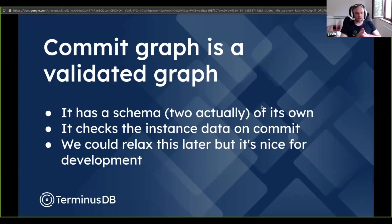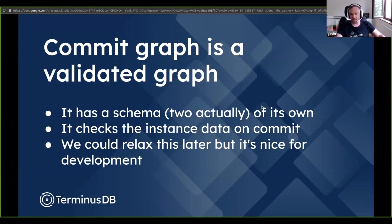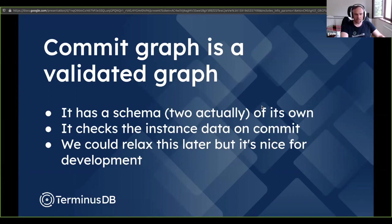The commit graph is itself a validated graph — it has a schema. In fact it has two schemas, and it takes the union of the two and checks the commit graph against that union. All instance data written there should be transactionally correct according to that schema. We could relax this later, and it does reduce performance somewhat, but it's really nice to have — we've caught several errors from accidentally trying to write nonsense into the commit graph in the backend.